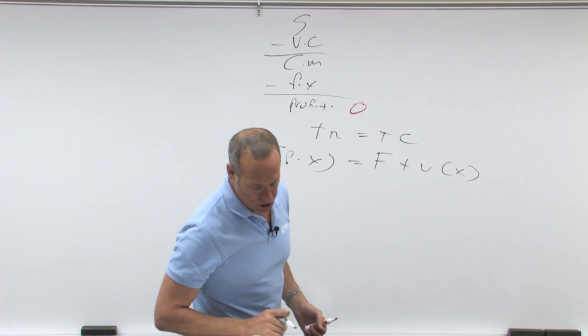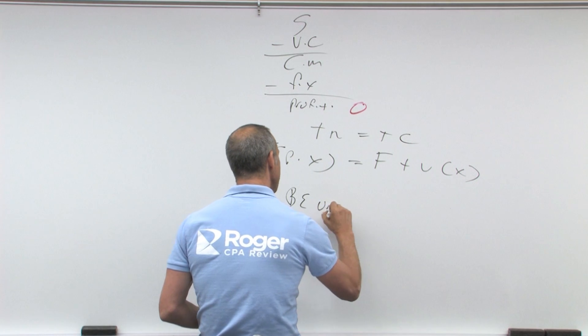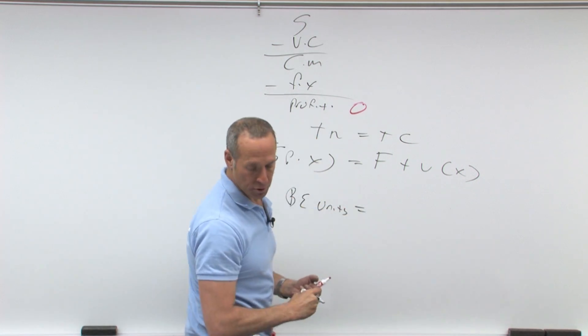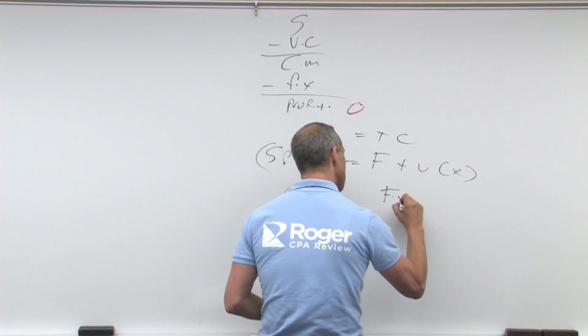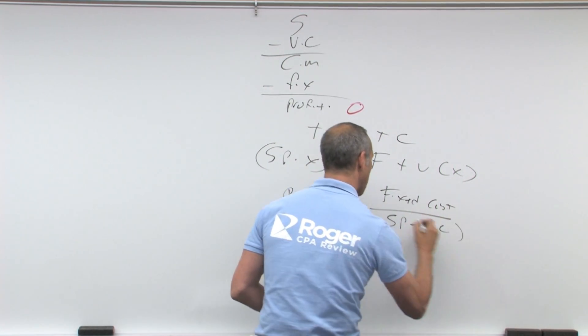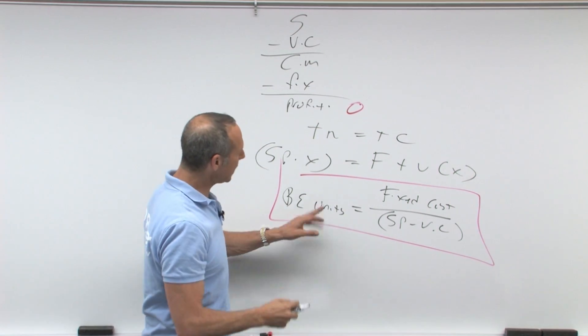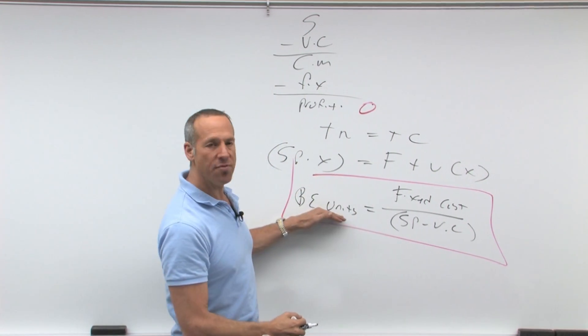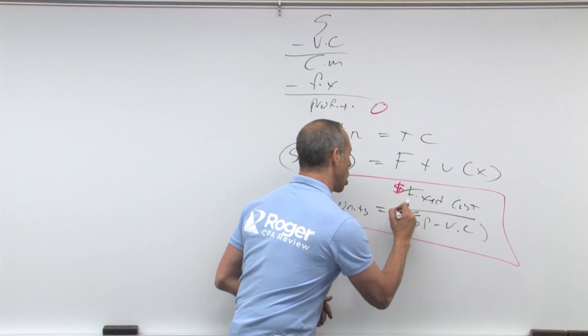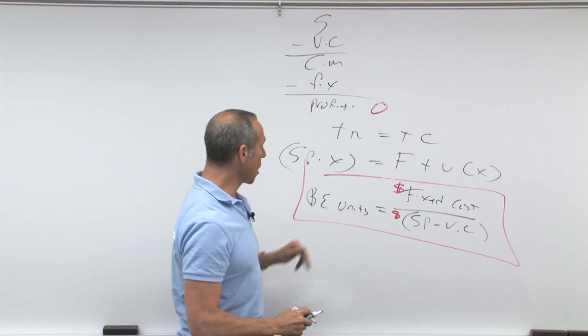What do you end up with? You end up with your formula, as you'll see in the notes, which is breakeven in units equals fixed cost over sales price minus variable cost. So that is your formula. What is it? Breakeven in units. Remember, breakeven in units is dollars over dollars. Dollars over dollars is non-dollars.